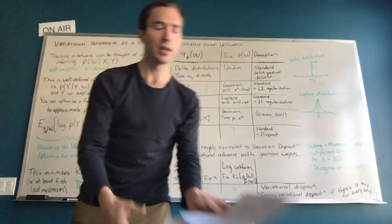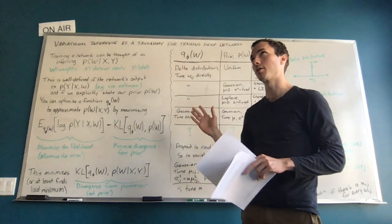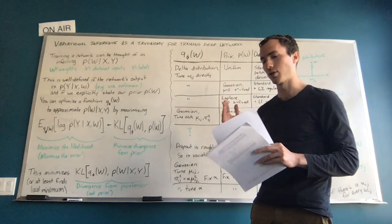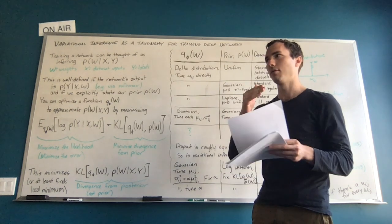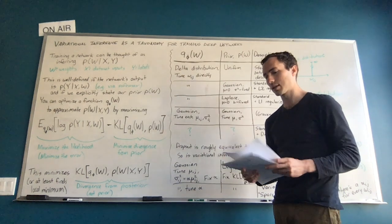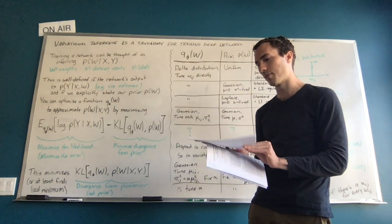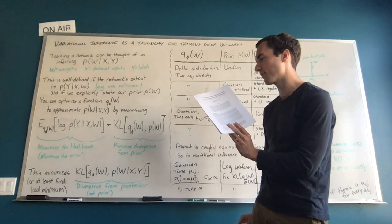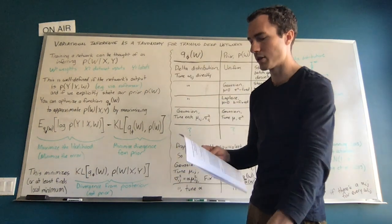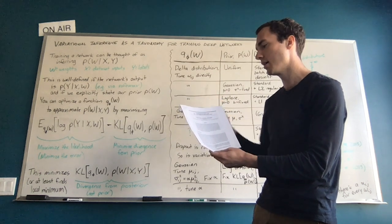I'm talking about something that's not new to researchers — plenty of people know what I'm going to point out, but it's something a lot of people just know quietly. It's a cool fact about variational inference, linked to a lot of the ways we train deep networks. Most of the first part is material from this paper: 'Practical Variational Inference for Neural Networks' by Alex Graves from 2011. Toward the end I'll be talking about 'Variational Dropout and the Local Reparameterization Trick.'